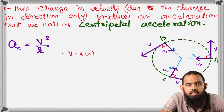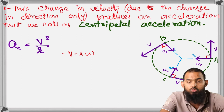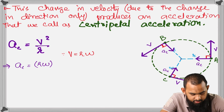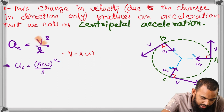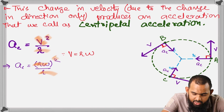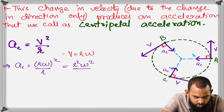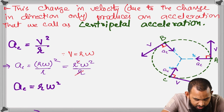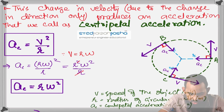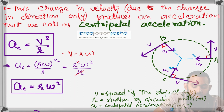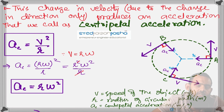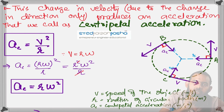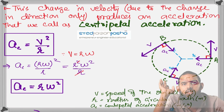Since we know v = rω, we can substitute to get: ac = (rω)²/r = r²ω²/r = rω². So centripetal acceleration can also be written as rω². To summarize: v is the speed in m/s, r is the radius of the circular path in meters, and ac is the centripetal acceleration in m/s². This acceleration is produced solely due to the change in direction.